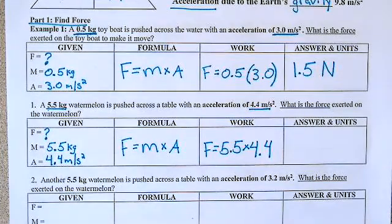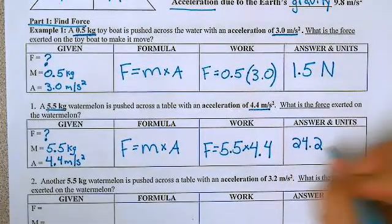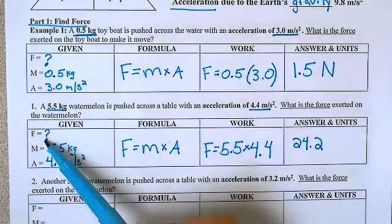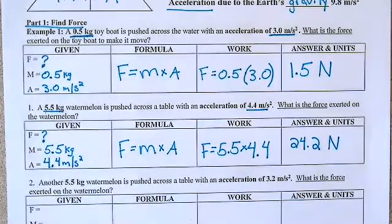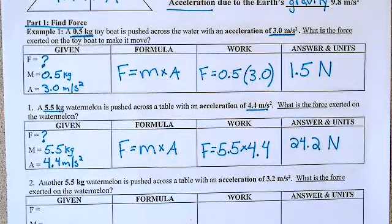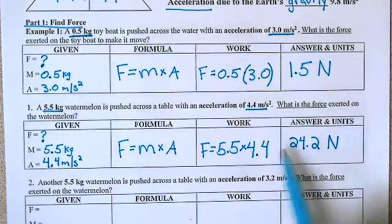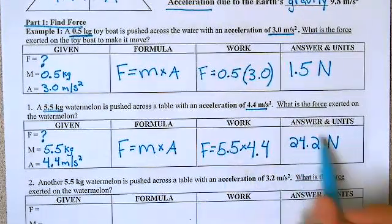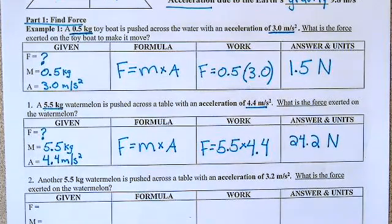So when we put this into our calculator, 5.5 times 4.4, you should get 24.2. And again, we're looking for force. Force is in newtons, so the units will be in newtons. You could round this to 24 if you're looking at significant digits. Since this only has two, this has two, this technically should only be 24, but that's up to you. You can leave it at 24.2.